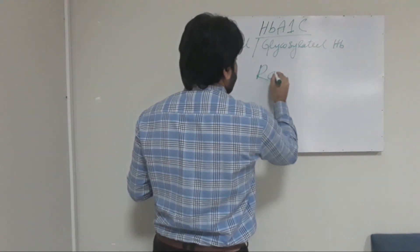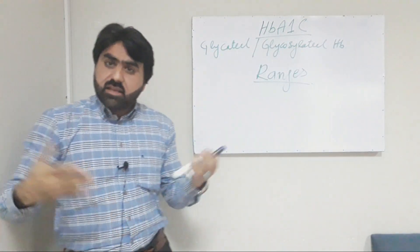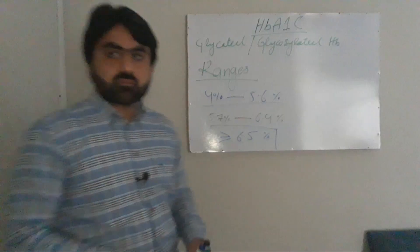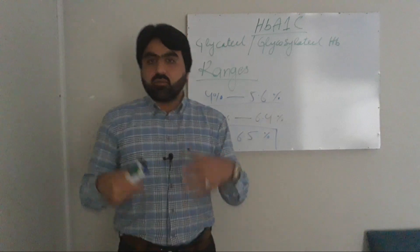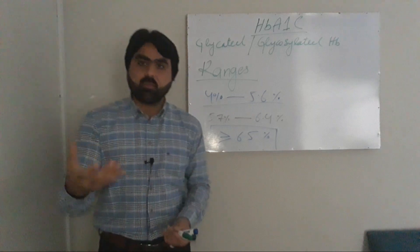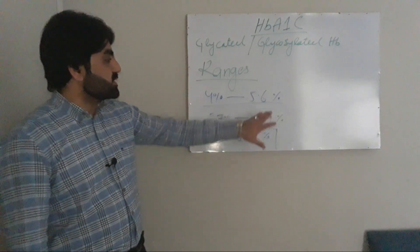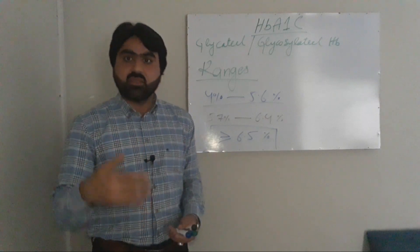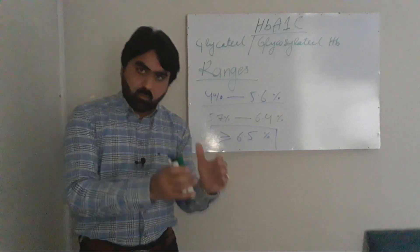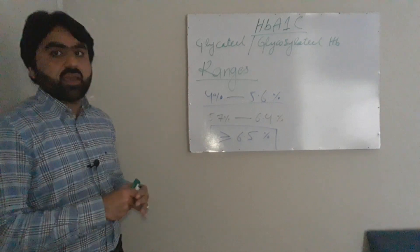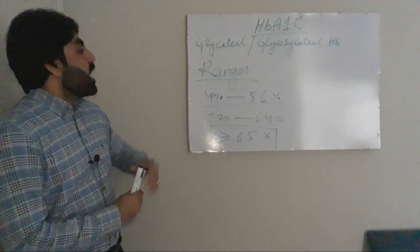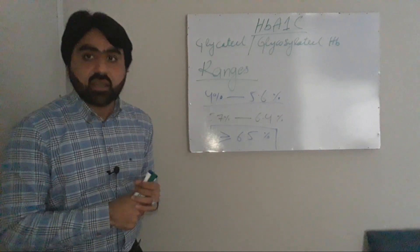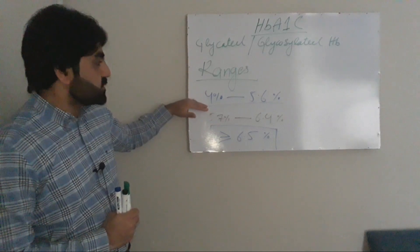There is a little bit of controversy about the unit used for HbA1c. The American Diabetes Association prefers to report the value of HbA1c in percentages, as I wrote here, while European countries and some other countries prefer to report the value of HbA1c in millimoles per mole. Here I will discuss only the values reported by the American Diabetes Association in percentages.